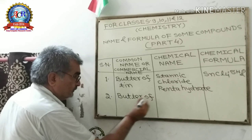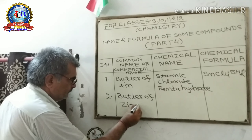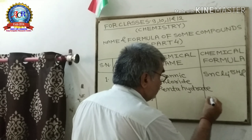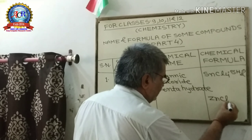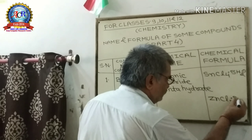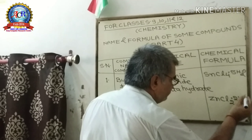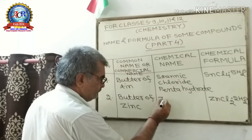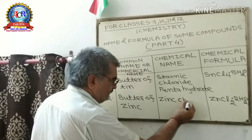Second: Butter of Zinc. Its chemical formula is ZnCl₂·2H₂O. Its chemical name is Zinc Chloride Dihydrate.